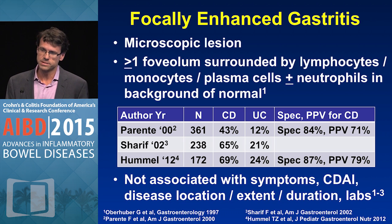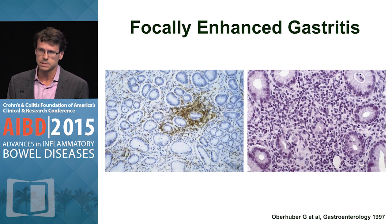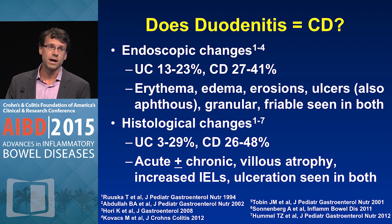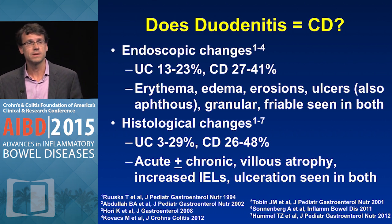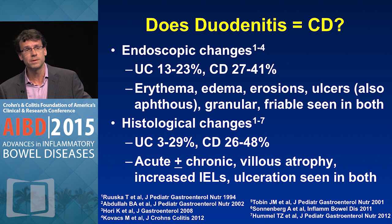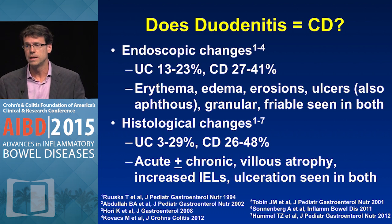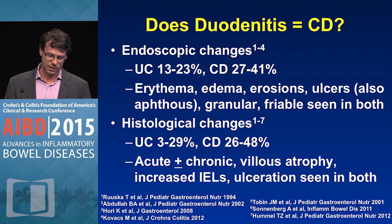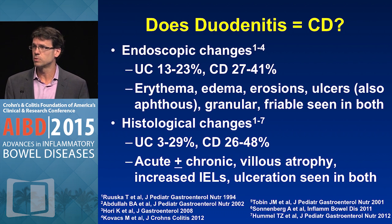It doesn't seem to be associated with prognostication. How about duodenitis — does that mean you have Crohn's disease? It turns out that while not quite as common as gastritis, it can be seen in a fair number of patients with both ulcerative colitis and Crohn's disease, with the same endoscopic and histological features. So it doesn't reliably differentiate one disease from the other.